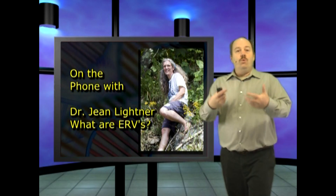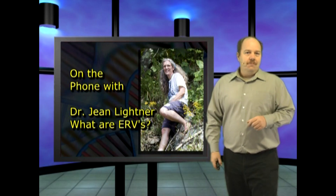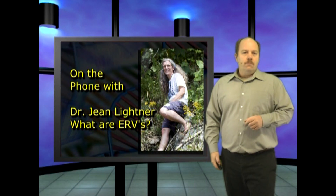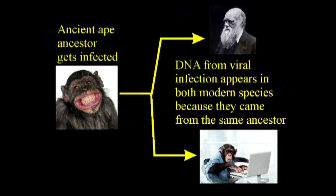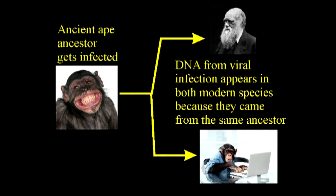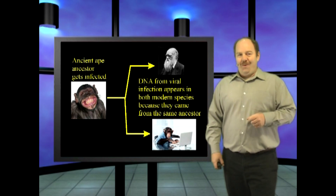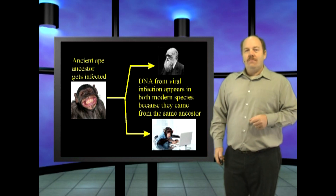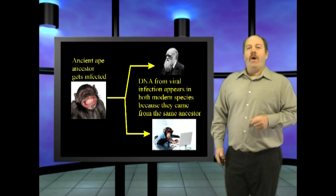How does that relate to the creation-evolution debate? If we assume that ERV sequences are really from a past infection in the germline, and if we assume that retroviral sequences are inserted essentially randomly, then when we find an ERV sequence that is very similar and in the same position in two different animals, it would make sense that this came from an infection that happened in one of their ancestors. The evolutionists were really excited when they found out that humans and other primates share similar ERV sequences in the same position — to them, that was proof that humans and other primates had to share a common ancestor. It seemed that's the best way to explain it.